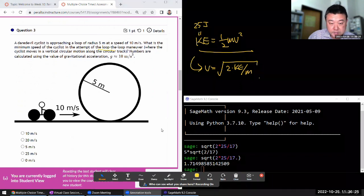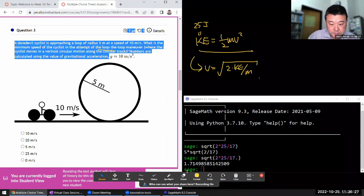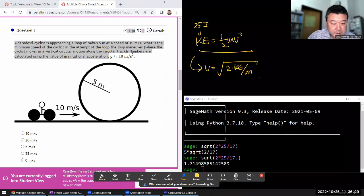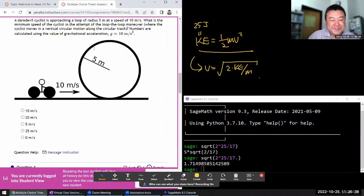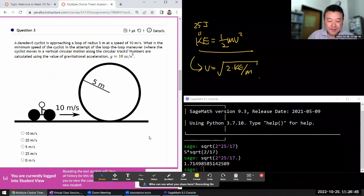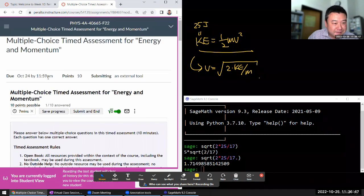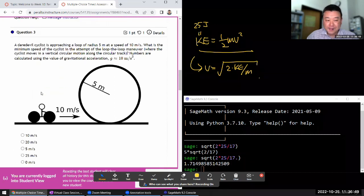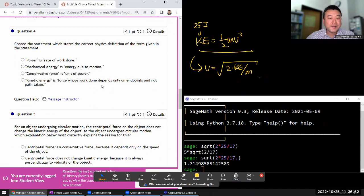A daredevil cyclist is approaching, I'm sorry, I'm just trying to erase this thing. Approaching a loop of that radius. What is the minimum speed of the cyclist in the attempt of the loop-the-loop maneuver? So this is a trick question. Let me first do the calculation pretending that I don't know the trick. And actually, let me do this last because they could spend some time. I'll come back to this. It's a trick question.